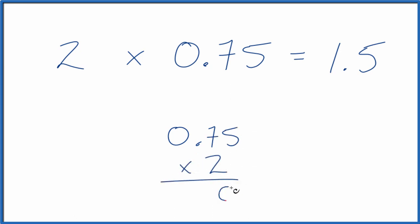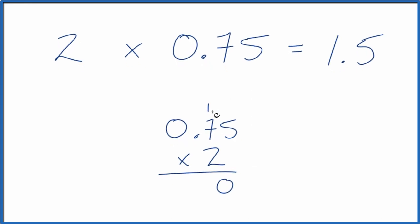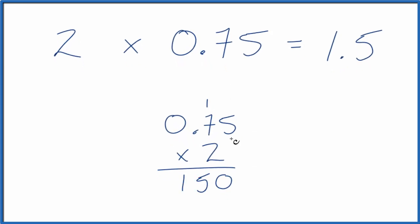2 times 5, that's 10. Put one up here. 2 times 7, that's 14. Plus 1, 15. We have 1, 2 decimal places. So let's move over 1, 2. And we get 1.50 or 1.5.